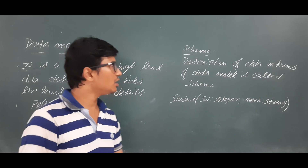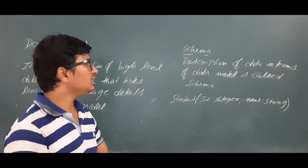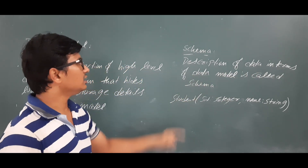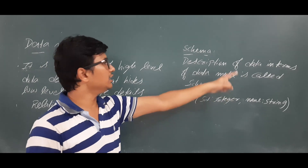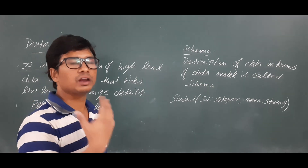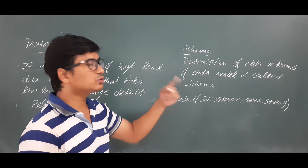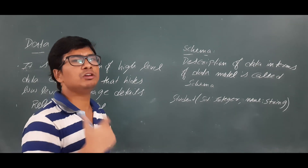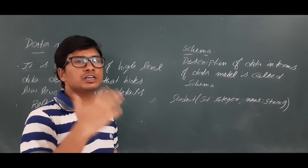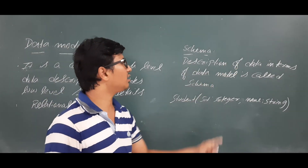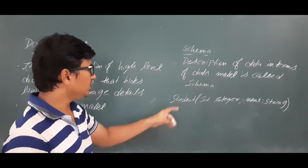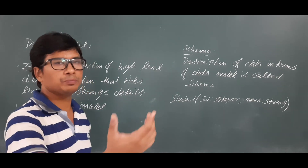In the relational model, you should understand the terminology of a schema. A schema is a description of data in terms of a data model. Depending on whether you are using a network model, hierarchical model, or relational model, the data will be described in a different way. So the description of data in terms of a data model is called a schema.